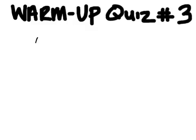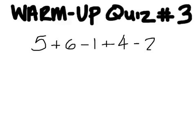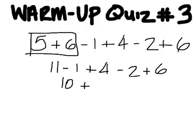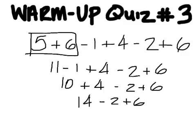Number three. You have to do 5 plus 6 first. That's 11. And then go back and do 11 minus 1. That's 10. And then 10 plus 4 is 14. 14 minus 2 is 12. Answer should be 18.